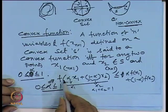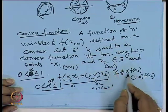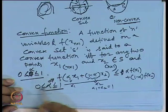Last class we discussed the convex set and convex function. A set is said to be convex if any line segment formed between any two points belongs to that set. A function defined on an n-dimensional convex set S is said to be a convex function if and only if f(αx₁ + (1−α)x₂) ≤ αf(x₁) + (1−α)f(x₂), where α varies from 0 to 1.